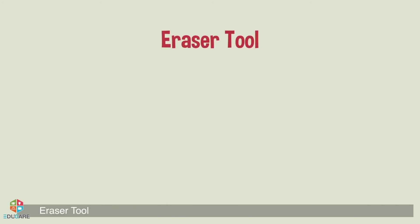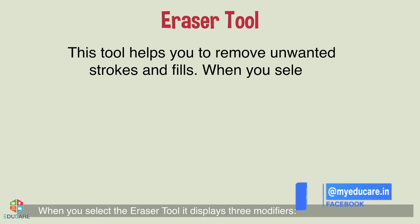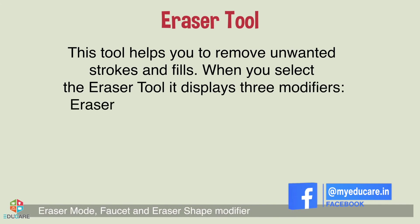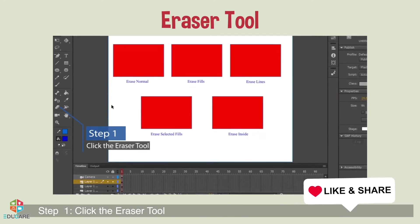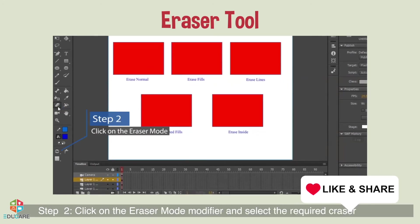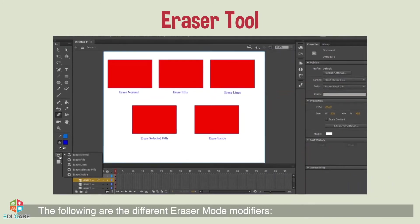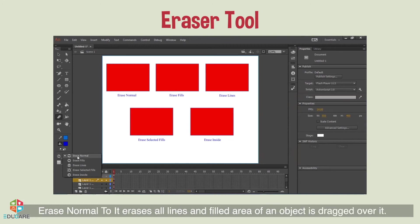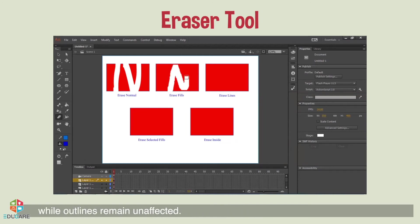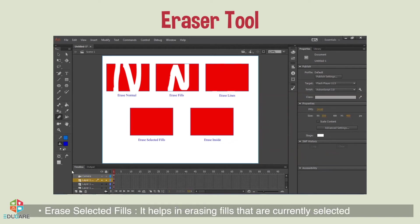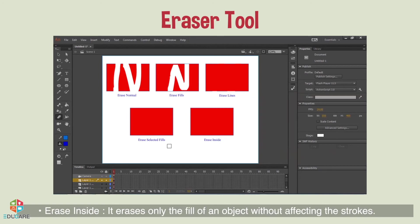Eraser tool: this tool helps you remove unwanted strokes and fills. When you select the eraser tool, it displays three modifiers — Eraser Mode, Faucet, and Eraser Shape. Step 1: click the eraser tool. Step 2: click on the Eraser Mode modifier and select the required eraser. The eraser modes are: Erase Normal — erases all lines and filled areas; Erase Fills — erases only filled areas while outlines remain unaffected; Erase Lines — erases only strokes without affecting fills; Erase Selected Fills — erases currently selected fills without affecting strokes; Erase Inside — erases only the fill of an object without affecting strokes.